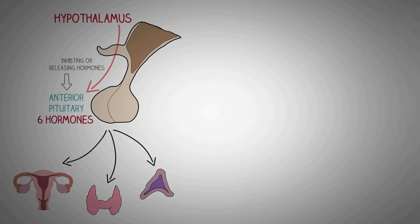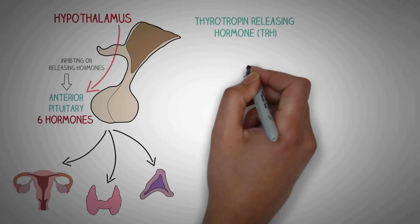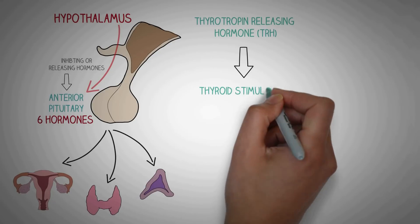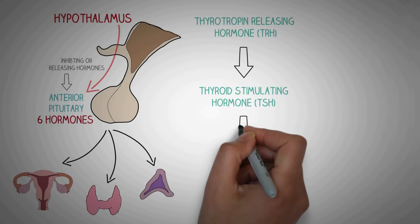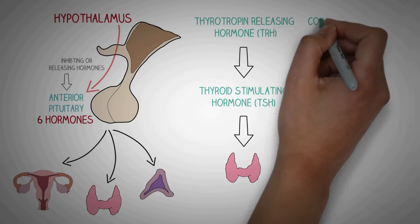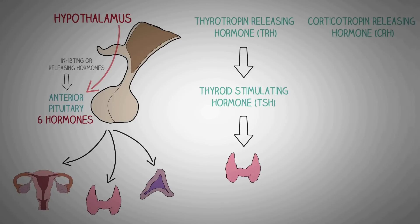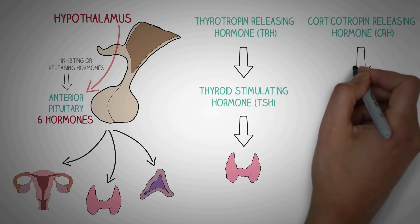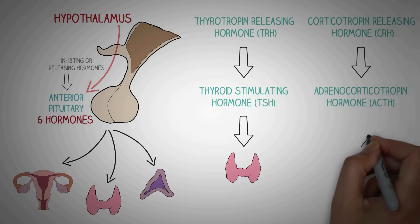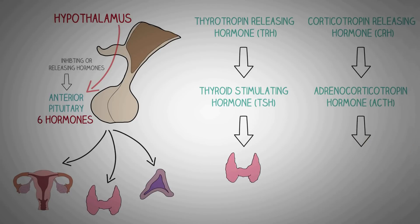For example, when the hypothalamus releases thyrotropin-releasing hormone (TRH), it is carried to the pituitary through blood vessels, causing the release of thyroid-stimulating hormone (TSH). TSH then acts on the thyroid gland and causes the release of important thyroid hormones. Similarly, the hypothalamus releases corticotropin-releasing hormone (CRH), which causes the release of adrenocorticotropin hormone (ACTH) from the pituitary, and ACTH then acts on the adrenals causing the release of important adrenal hormones.